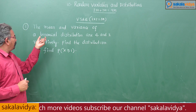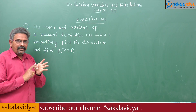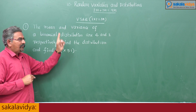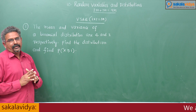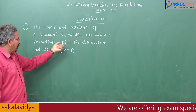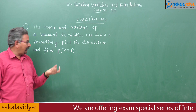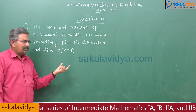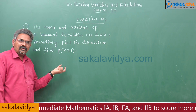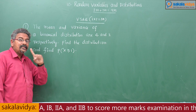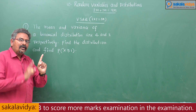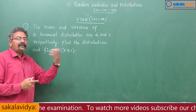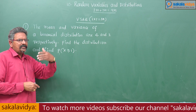In the binomial distribution, the mean is equal to 4 and variance is equal to 3. First we have to find out the binomial distribution, and after that we have to find the probability of getting at least 1, that is P(X ≥ 1). At least 1 means 1 minus the probability of getting nothing, that is 1 minus P(X = 0).